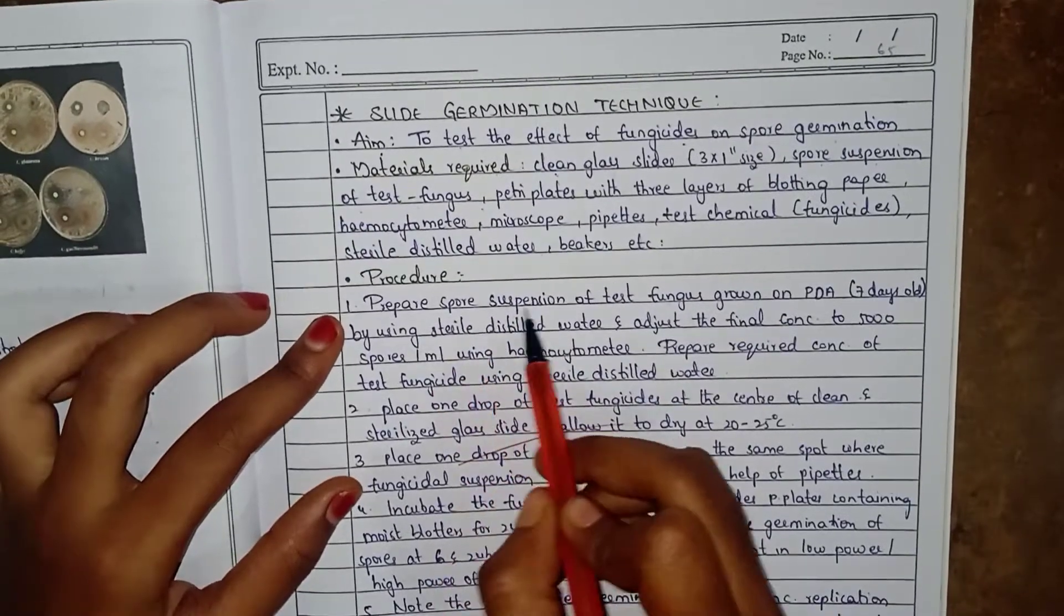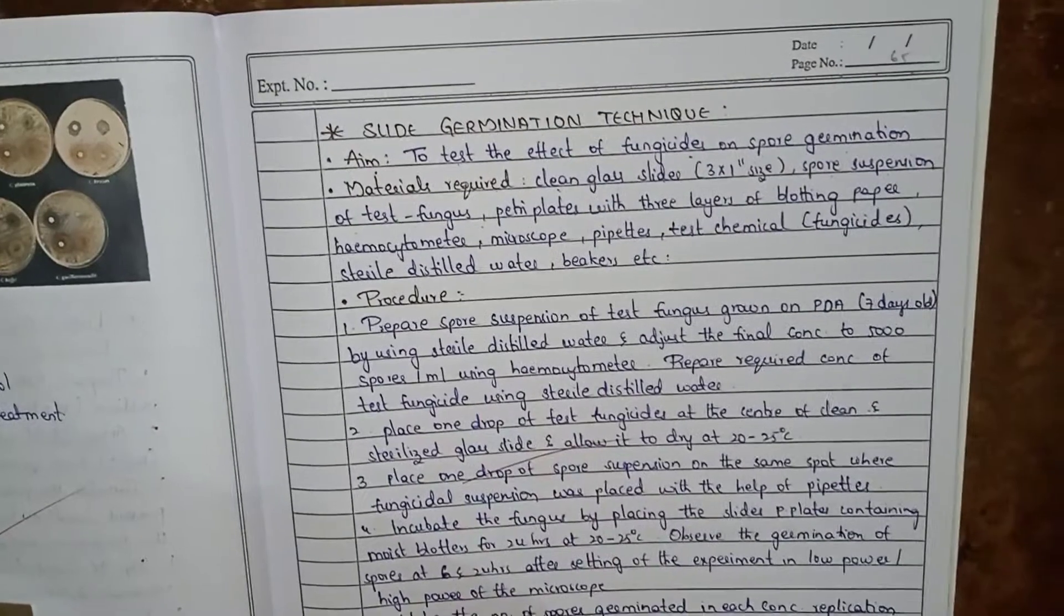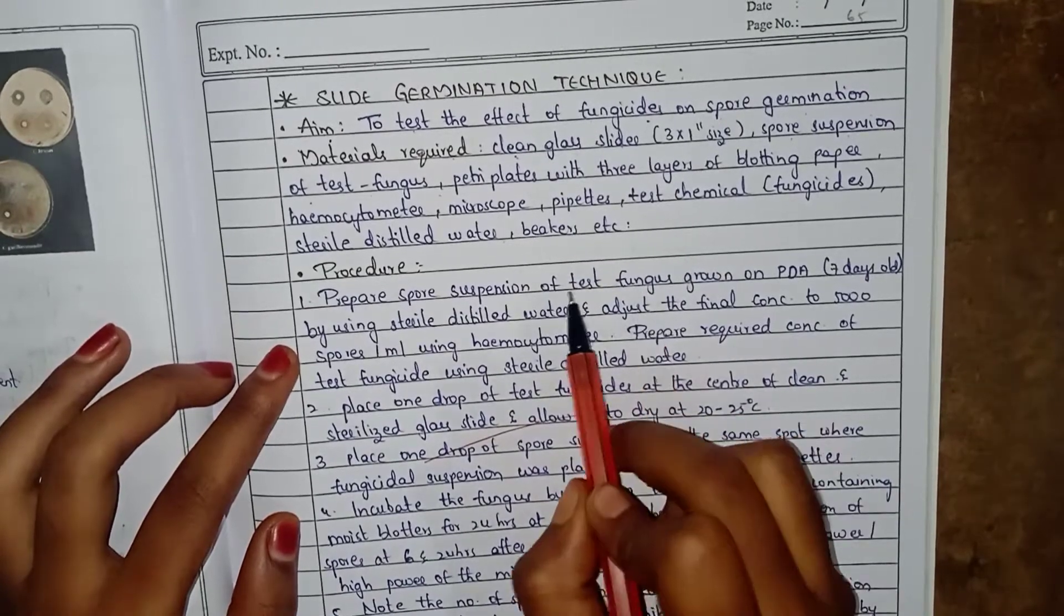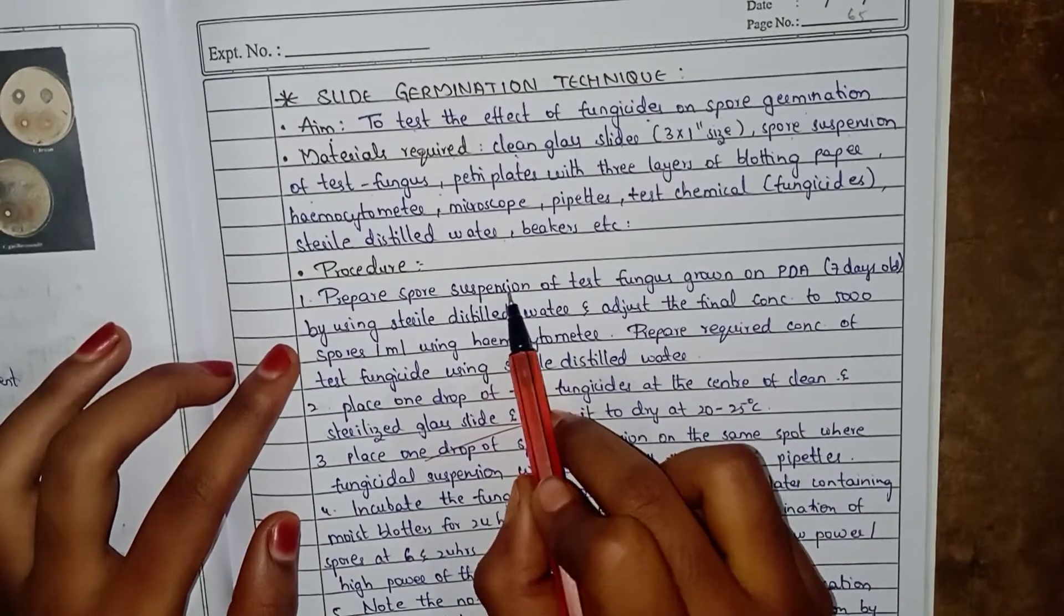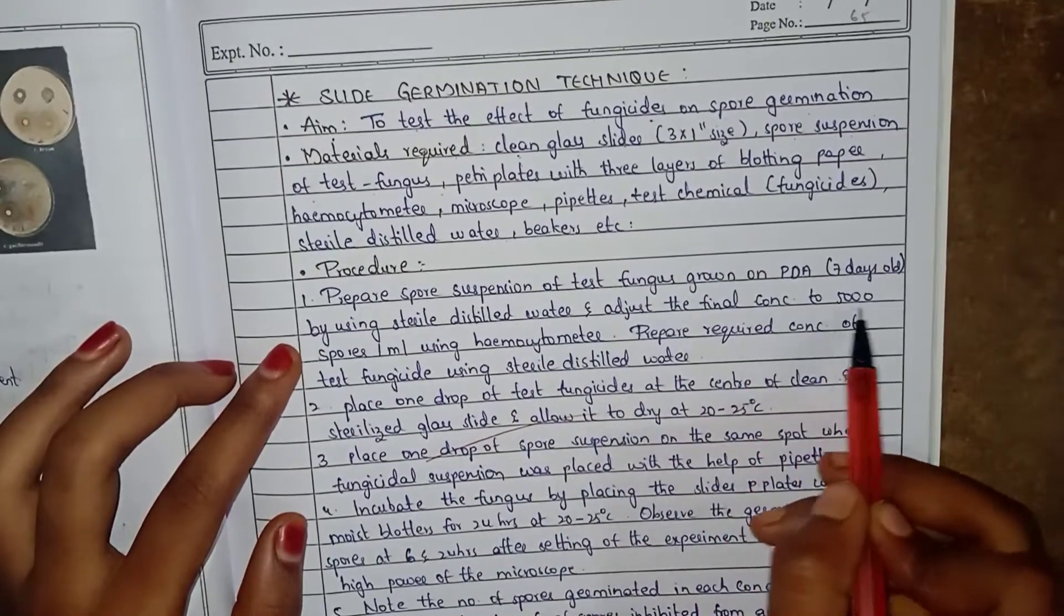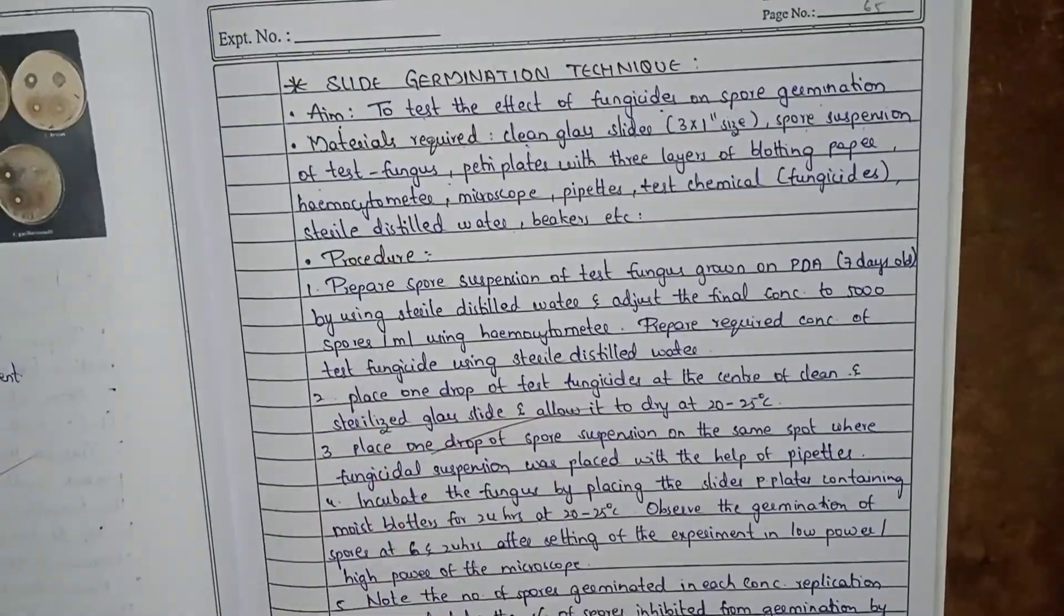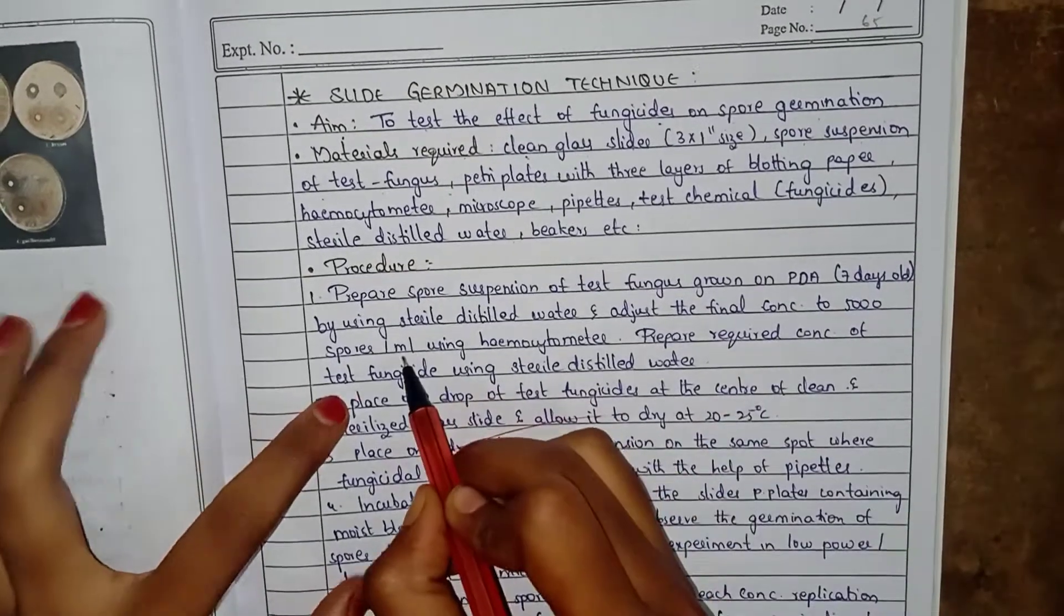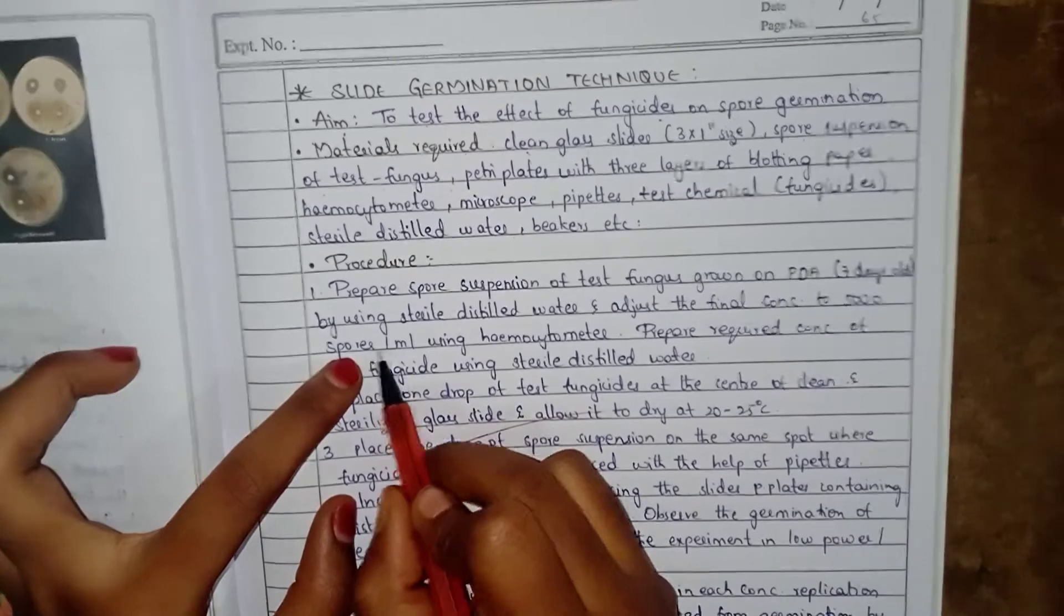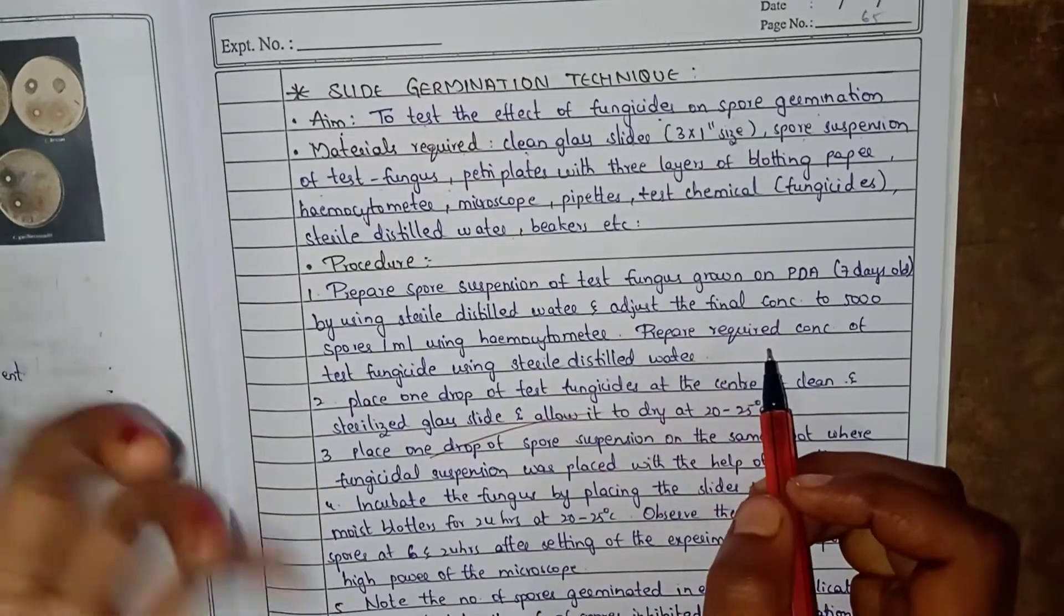Prepare spore suspension of test fungus grown on PDA medium by using sterile distilled water. Adjust the final concentration to 5,000 spores per ml. The spore suspension should contain 5,000 spores per ml. The measurement device used is a hemocytometer.